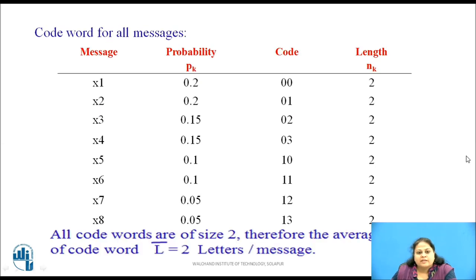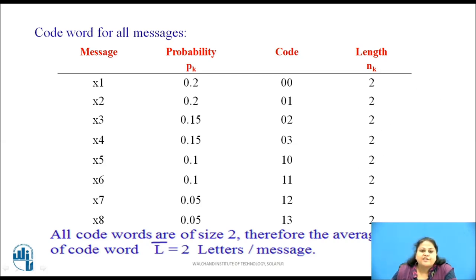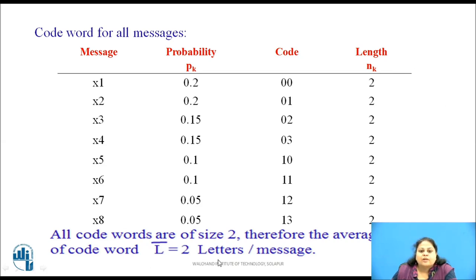Similarly, the codewords for all messages are obtained. This table shows the codeword and the length of each code for each message. All codewords are of length 2, therefore the average length of the codeword is 2 letters per message.